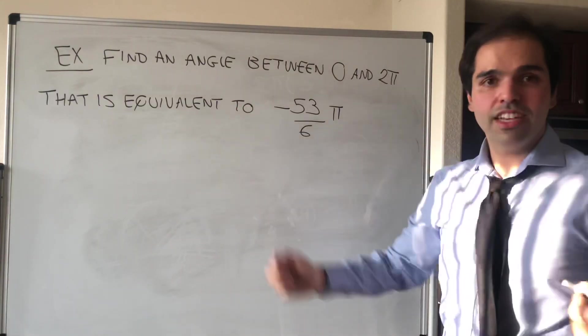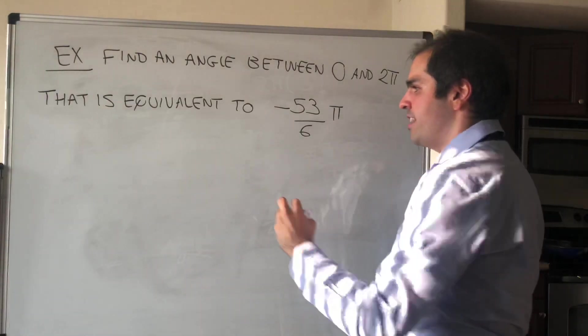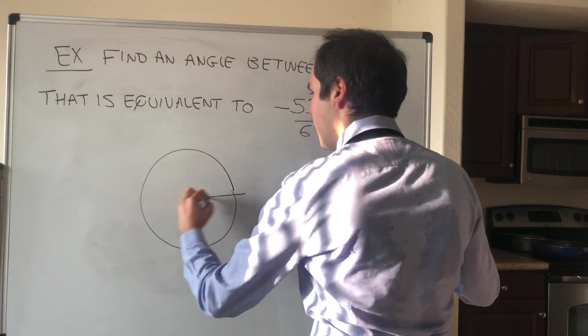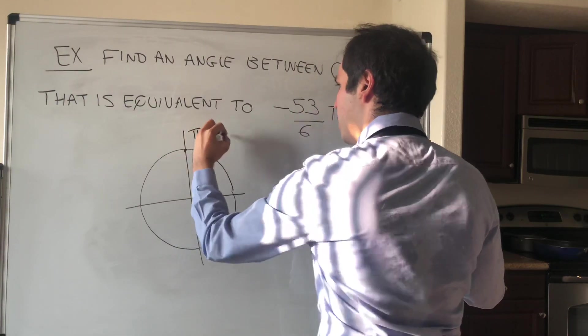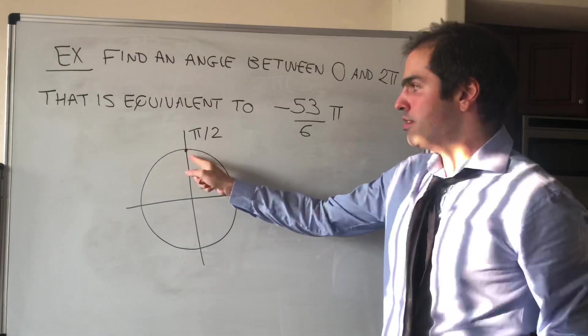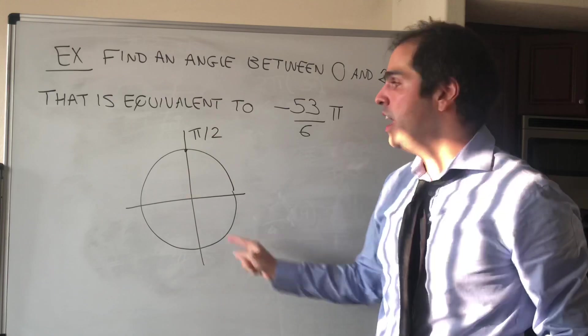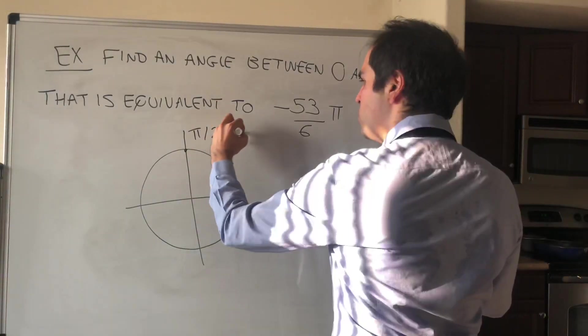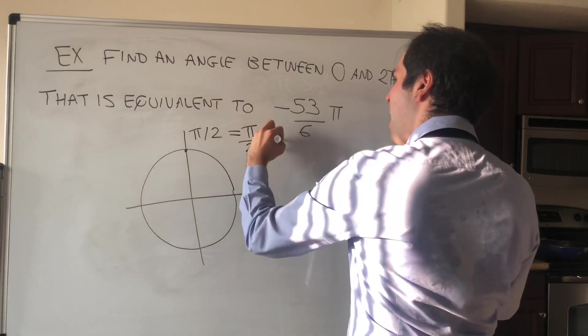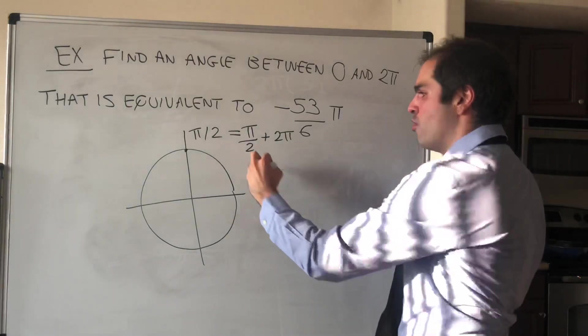Now what do I mean by that? Let me tell you an example. Suppose you have this circle, and I tell you π/2. Notice you can add any multiple of 2π and still get the same angle. So π/2, that's actually the same thing as π/2 plus 2π, or if you want, that's 5π/2.